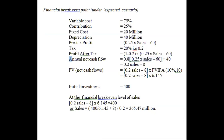Annual net cash flow equals profit after tax plus the depreciation component added back. Depreciation is 40 million and is added back because it is a non-cash charge. So annual net cash flow equals 0.8 multiplied by (0.25 × sales minus 60), plus 40. Simplifying: 0.8 × 0.25 gives 0.2 sales, and 0.8 × 60 minus 40 gives 48 minus 40, which equals 8.